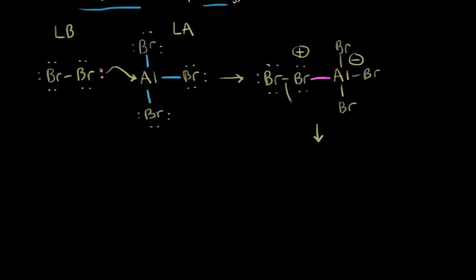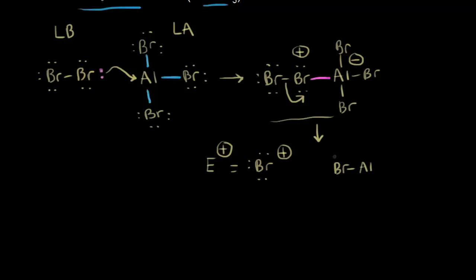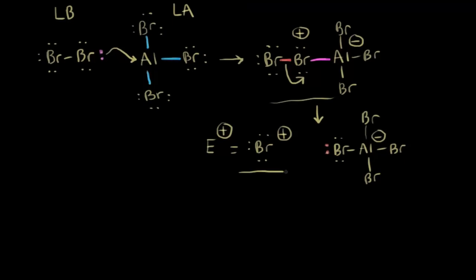If the electrons (shown in red) move off onto the bromine on the right, the bromine on the left loses a bond and is now surrounded by only three lone pairs of electrons, giving it a +1 formal charge. It simplifies things to think of this as Br⁺ — the electrophile in your mechanism for electrophilic aromatic substitution — even though technically it's the top complex that reacts with the benzene ring.